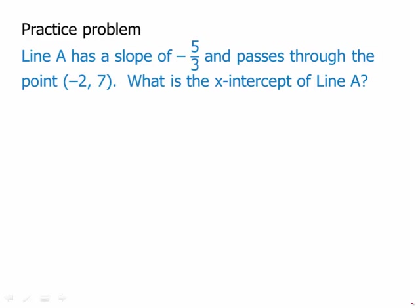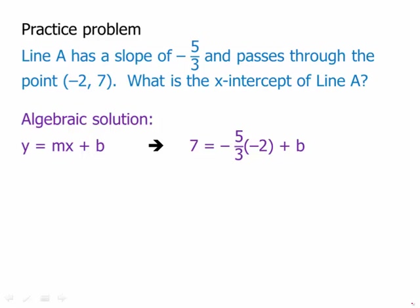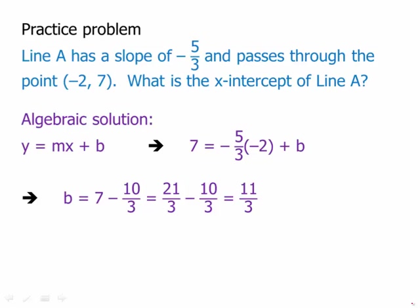We have two very different ways of going about this, and I'm going to show them both. The first is what I would call an algebraic solution. We write y = mx + b, plug in the slope of negative five-thirds, and also plug in the coordinates of the point x = -2 and y = 7. This gives us an equation for b. Negative five-thirds times negative two is positive ten-thirds, and then b equals seven minus ten-thirds. We find a common denominator, subtract, and we get the y-intercept. So now we have the full slope-intercept form y = mx + b.